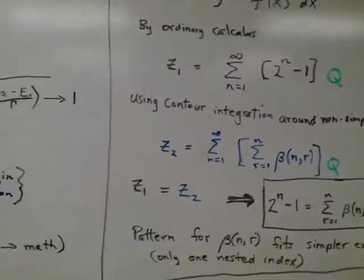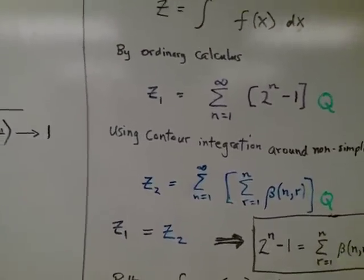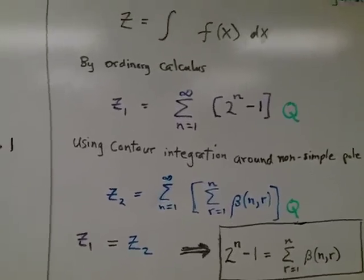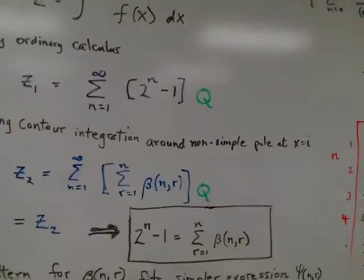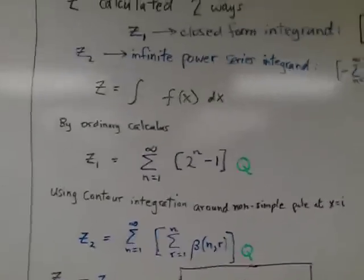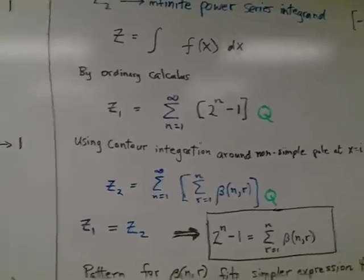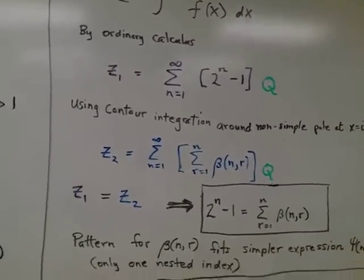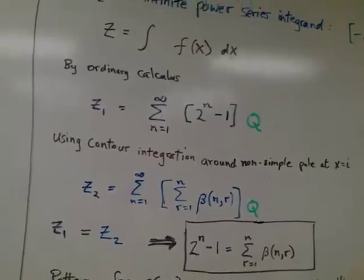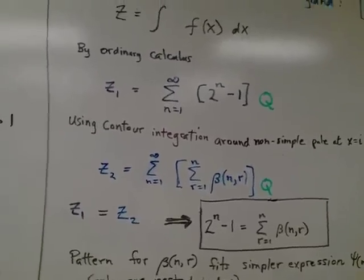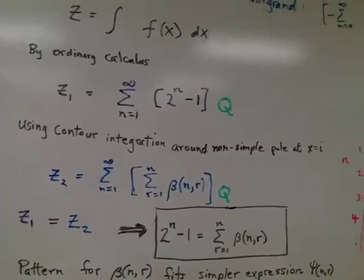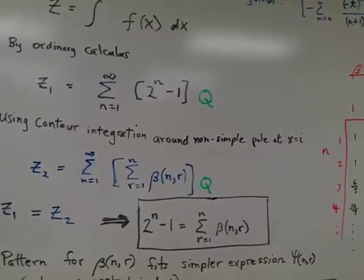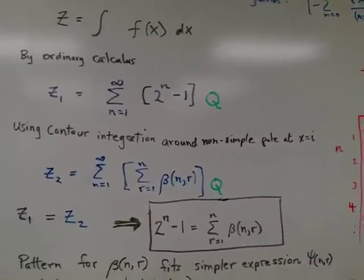If you do it the second way, it's a little more complicated because you have to use contour integration over the upper half of the complex plane around the simple pole at x equals i. And it gives you a result that has a very similar structure. It is an infinite sum from one to infinity, but one factor is a finite term itself over a function that I call beta, and also a common factor Q that appeared in the first way of deriving it.